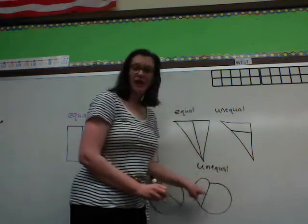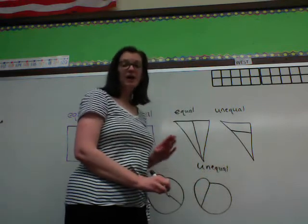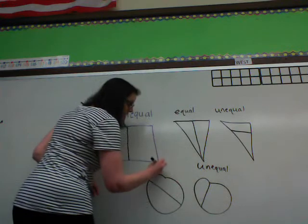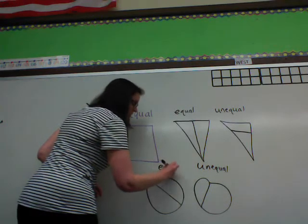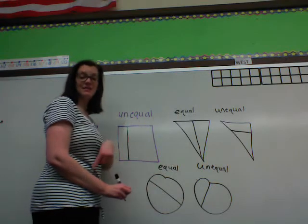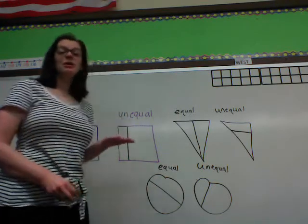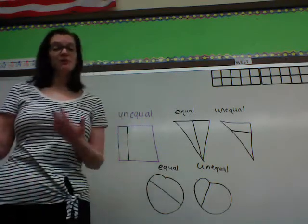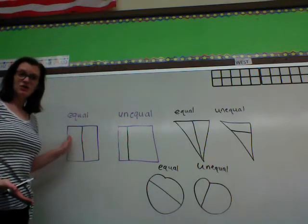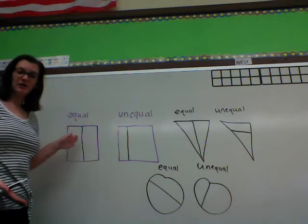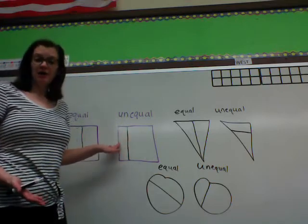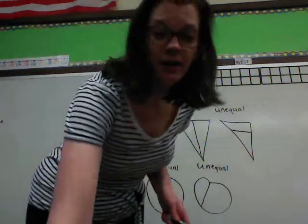The sides are not the same, so we cannot make a fraction out of this. But these are equal — each side of the circle that we divided is the same. That's what you're going to be learning about on Monday and Tuesday: if shapes are equal, with the same size on each part where we've drawn a line, or if they're unequal, where one side is bigger than the other.